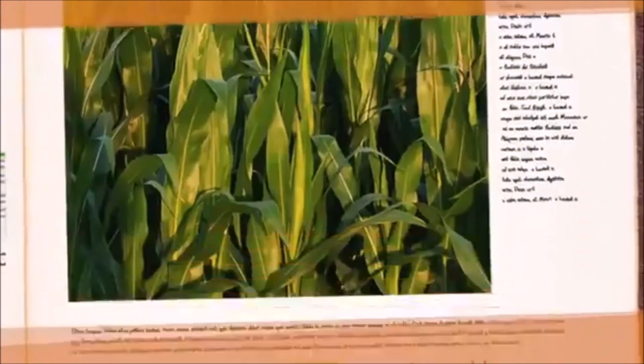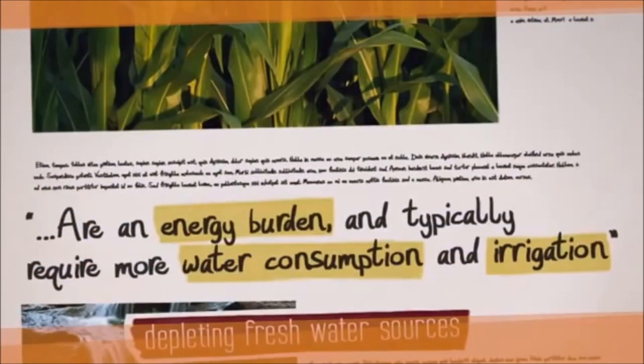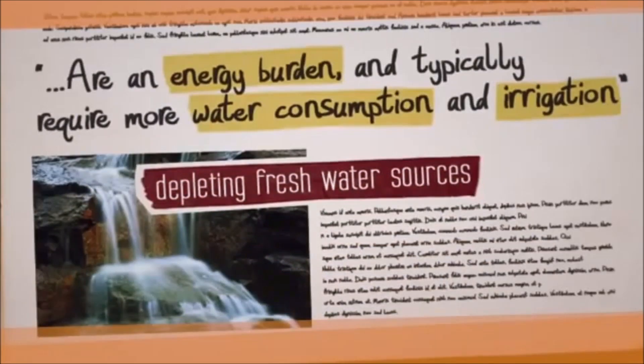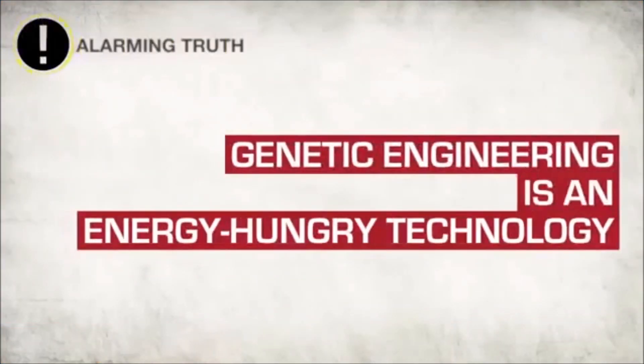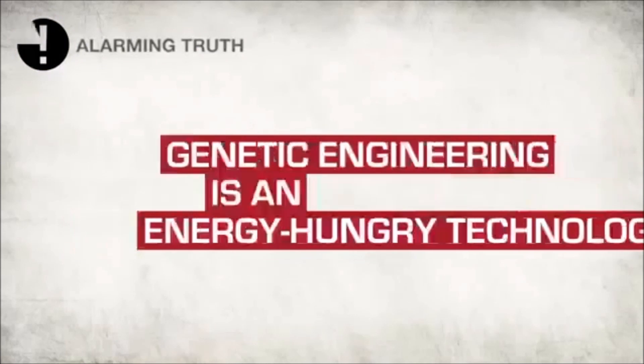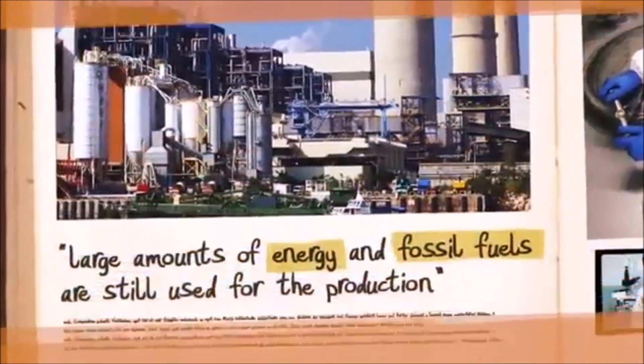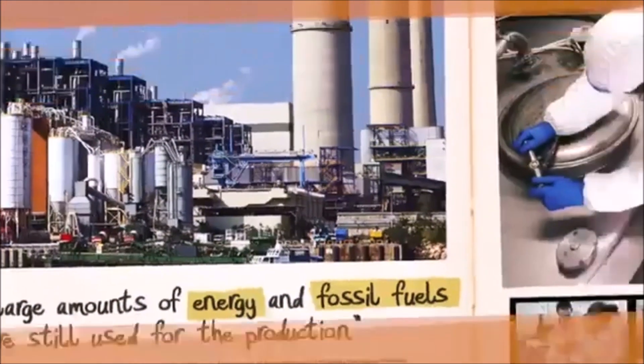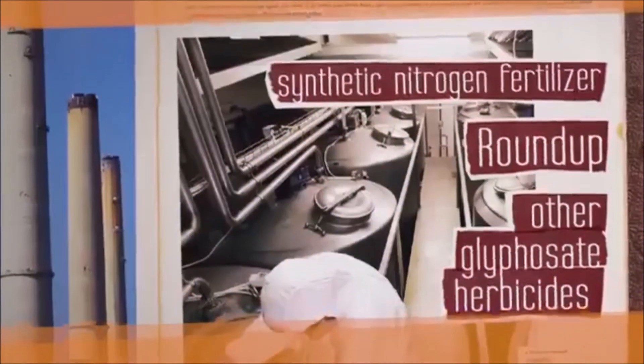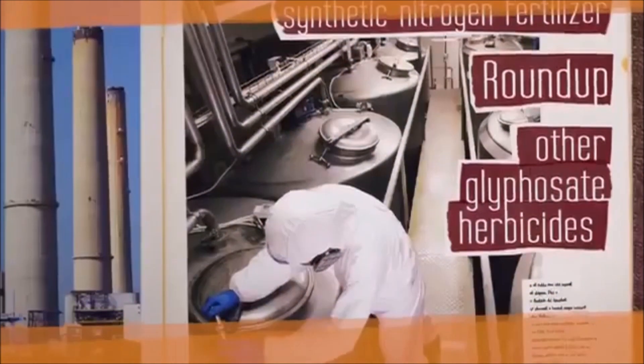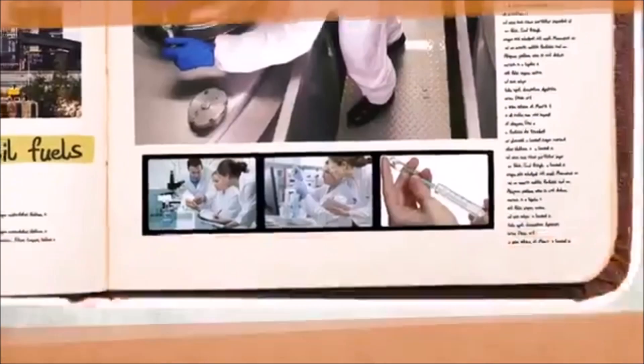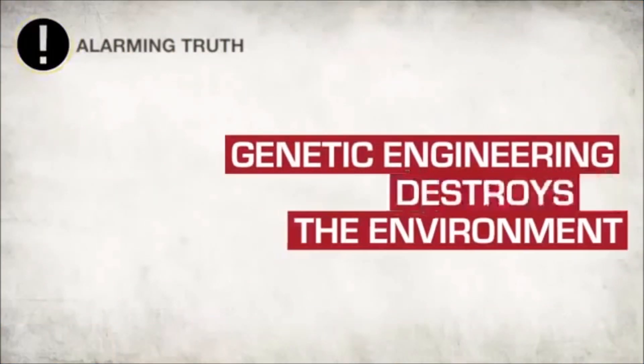Additional traits engineered into these plants are an energy burden, and typically require more water consumption and irrigation from our depleting fresh water sources. Genetic engineering is an energy-hungry technology. Large amounts of energy and fossil fuels are still used for the production of synthetic nitrogen fertilizer, Roundup, and other glyphosate herbicides used in GMO agriculture.